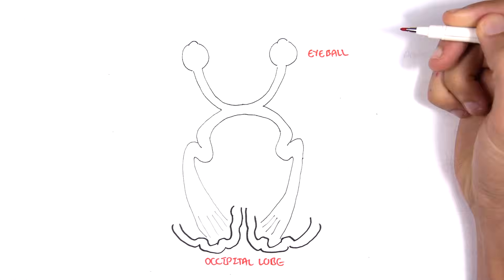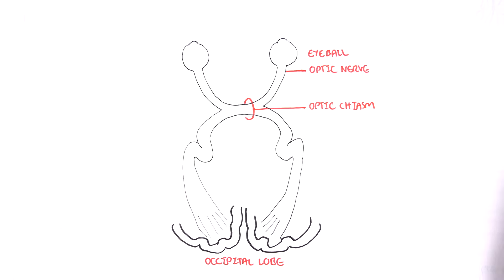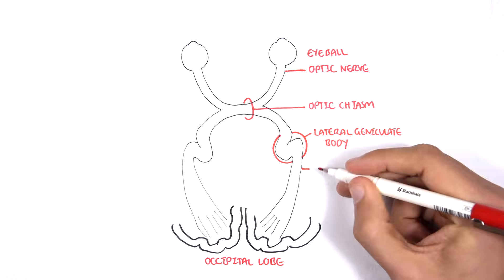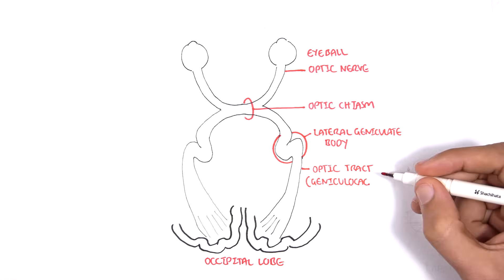So here is the occipital lobe, the eyeball, optic nerve, optic chiasm, lateral geniculate body and optic tract also known as a geniculocalcarine tract.